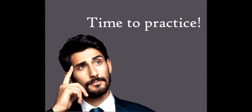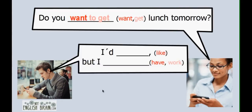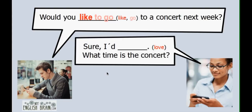Now it's time to practice. Use the verbs in the correct form. Example one: Do you wanna get lunch tomorrow? I'd like to, but I have to work. Example two: Would you like to go to a concert next week? Sure, I'd love to. What time is the concert?